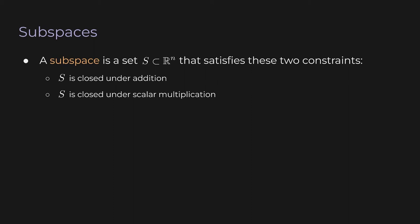For example, ℝ² is a subspace: take any two 2D vectors, add them together and you stay in 2D space; multiply any vector by a scalar and it's still a 2D vector. You never leave ℝ². The same is true for ℝ³, ℝ⁴, or ℝⁿ. But there are less obvious subspaces too — you could have a two-dimensional plane embedded in a higher-dimensional space. I'll come back to this idea at the end of the video.